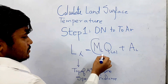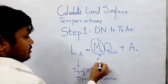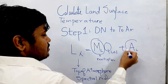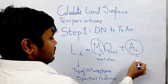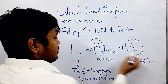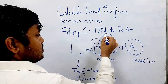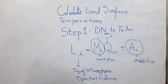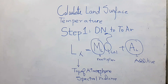L lambda is your top of atmospheric spectral radiance. ML is a band-specific multiplier, which you will find in your metadata file for the specific band. You also have your band-specific additive vector, which you will find in your metadata file. Q calc is your digital number, the input of the band. The multiplier and additive you will find from the metadata file, and Q calc you will get from the band file you have downloaded.